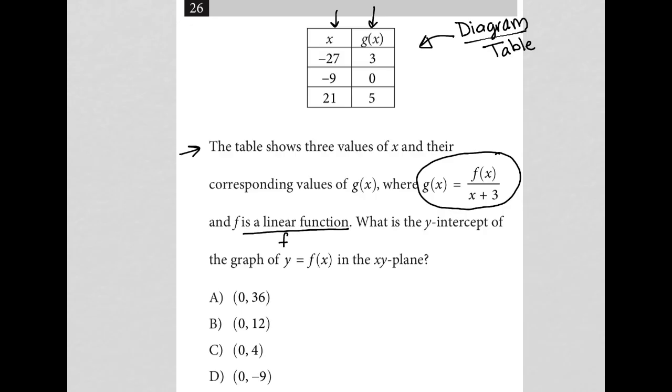So what does that mean? That means f(x) is equal to mx plus b. That's what that statement means. What is the y-intercept of the graph of y equals f(x)? Basically, we're asking what is the b value, because the b value here is the y-intercept. So what is the b value of the f(x) equation in the xy-plane?